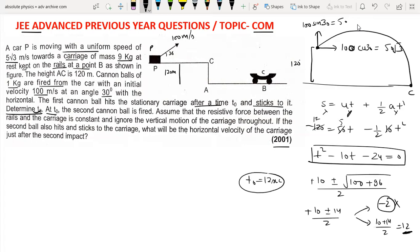At T0, at this time 12 seconds, the second cannon ball is fired. Assume that the resistive force between the rail and the carriage is constant. Ignore vertical motion of carriage throughout. If the second ball also hits and sticks to the carriage, what will be the horizontal velocity of the carriage just after the second impact?